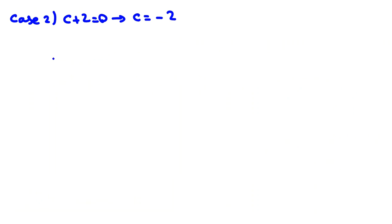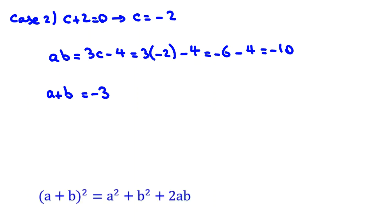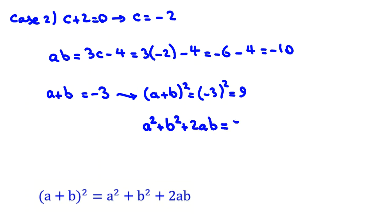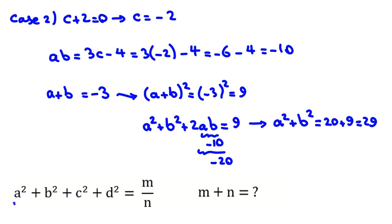Case 2: c = -2. From the second equation, ab = 3(-2) - 4 = -6 - 4 = -10. From the first equation, a + b = -3, so (a + b)² = 9, giving a² + b² + 2(-10) = 9, thus a² + b² = 9 + 20 = 29.